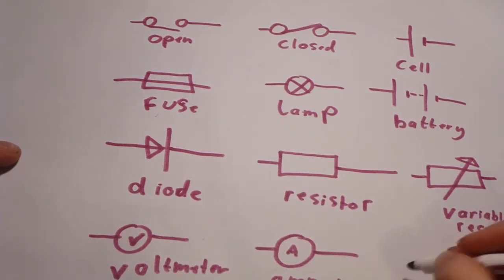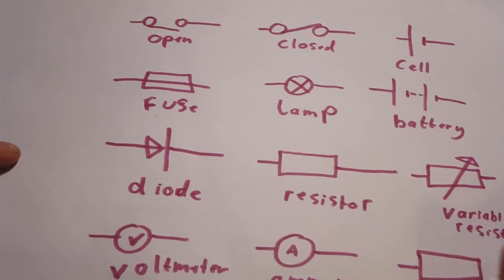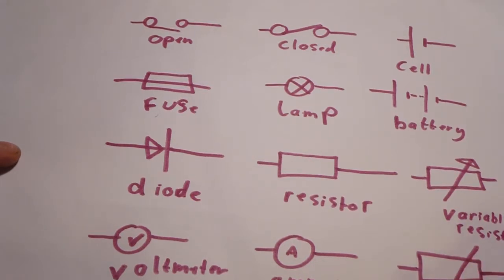After that, we have a thermistor, which is similar to a resistor but changes its resistance as temperature changes.